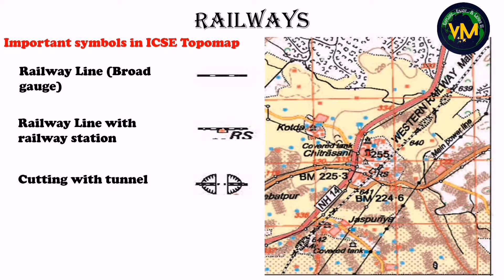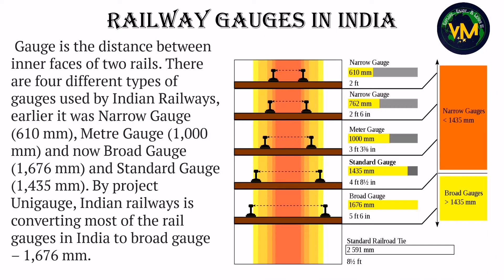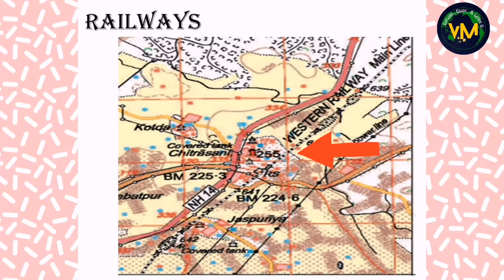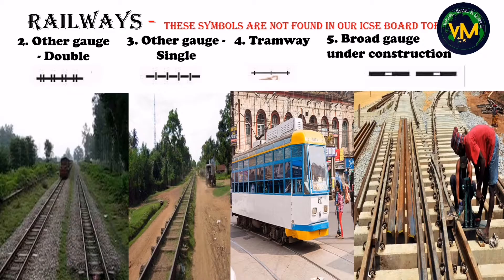Before explaining those three, let's see what a gauge is. Railway gauges in India can be divided into four — you will be learning this in detail in the theory part under the transport chapter. A gauge is the distance between the inner faces of two rails. For our exam we have broad gauge, and this is the symbol for broad gauge. In our topographical maps, near Chitrasani settlement we have a western railway main line — this is the symbol for a broad gauge. These other symbols — for other gauges (meter gauge, narrow gauge), double line and single line — are not found in our ICSE board topo maps.